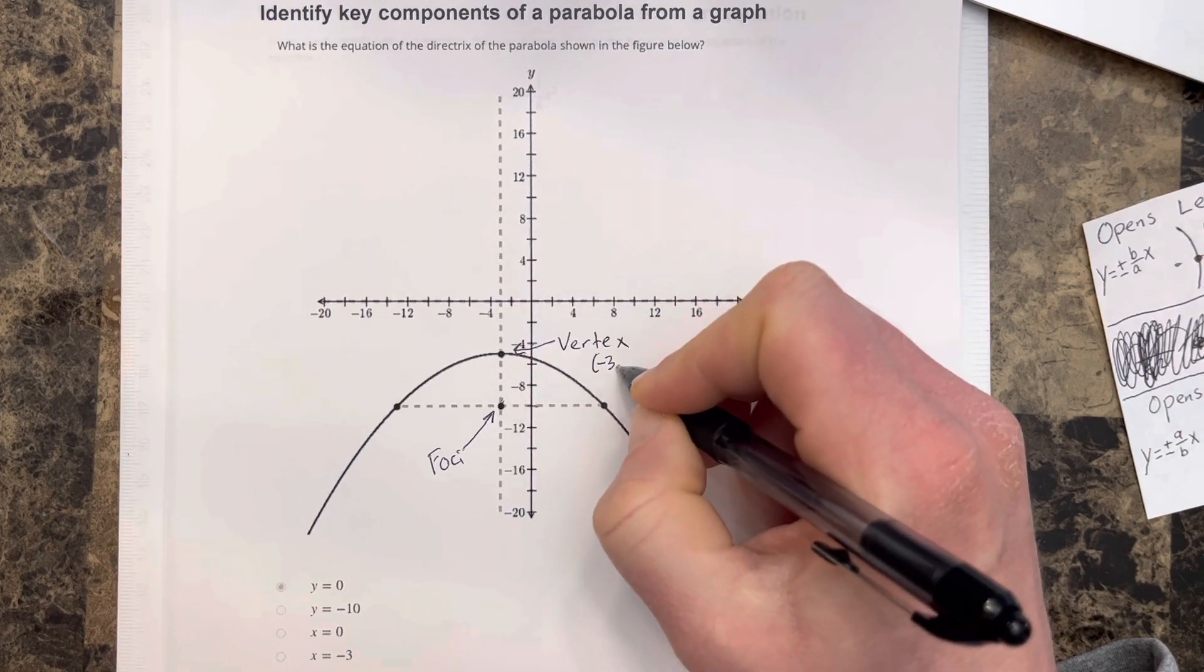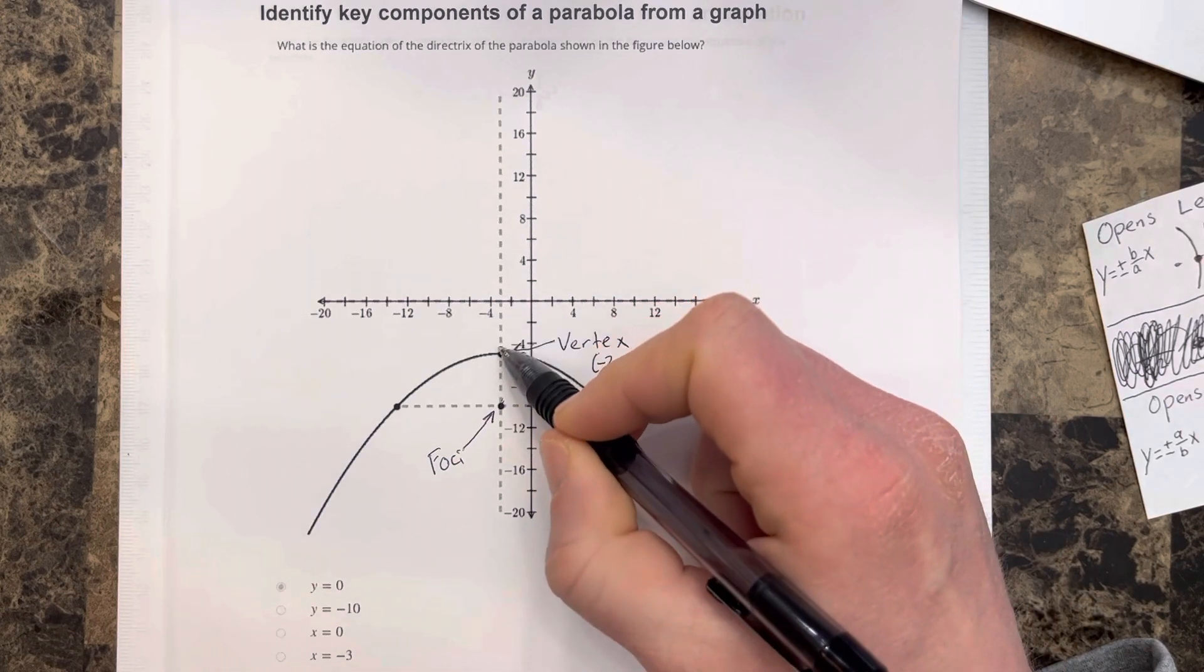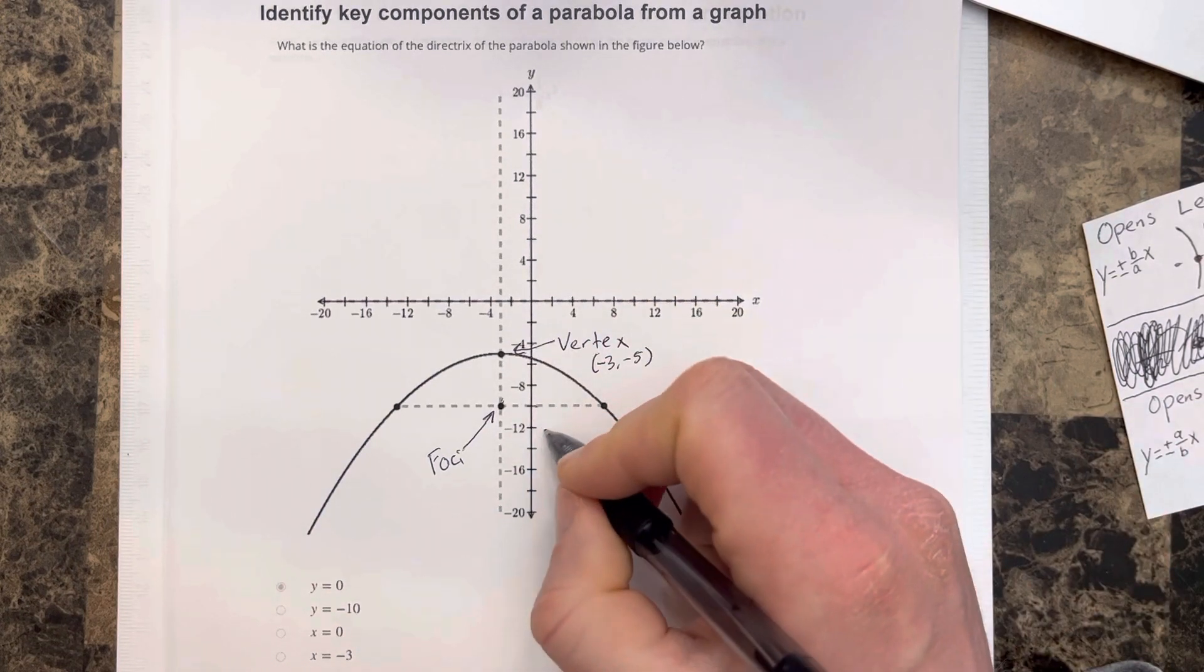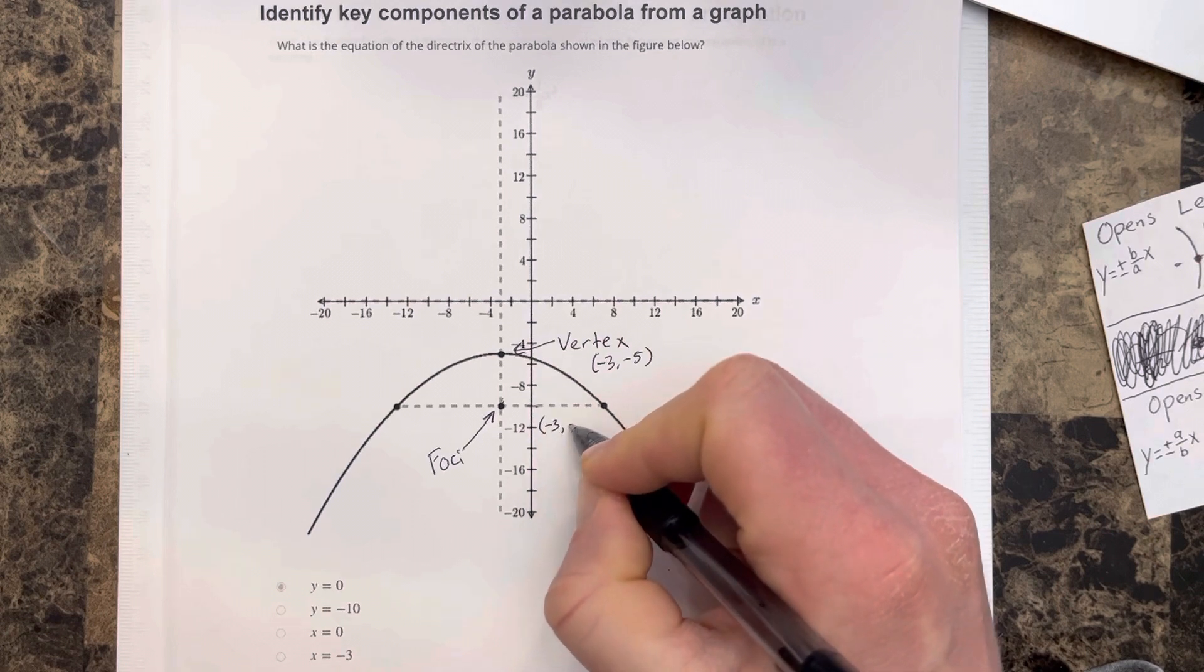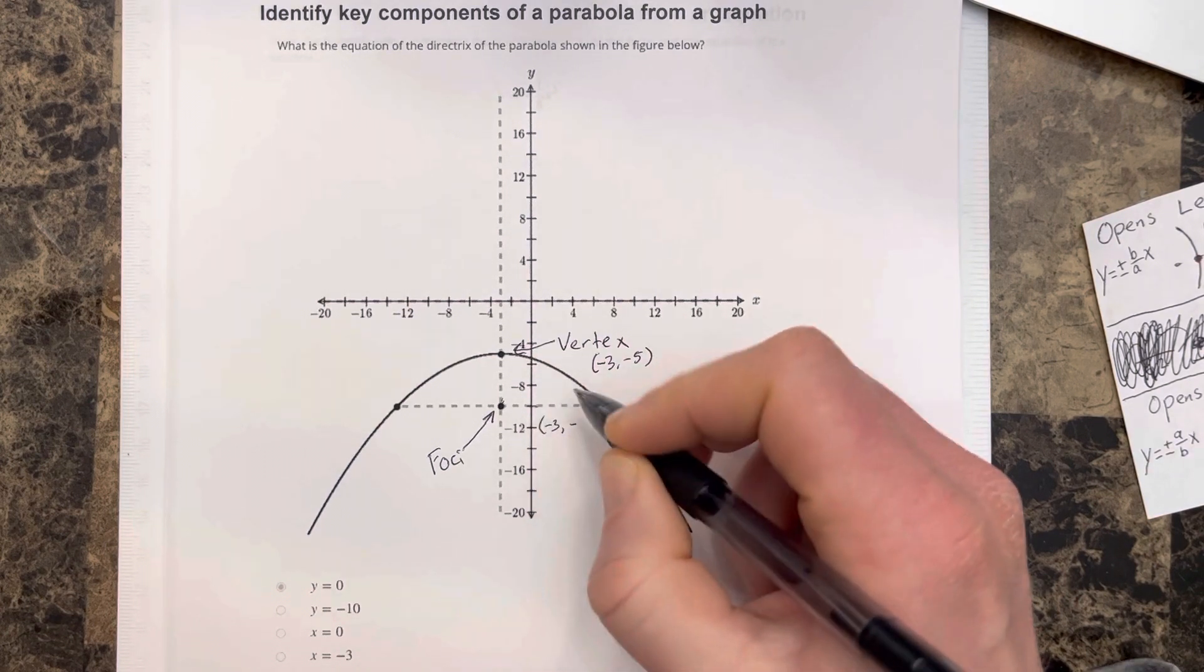The vertex is at negative 3, negative 5. If we look here, negative 3 for the x, negative 5 for the y. And the foci is at negative 3, negative 11. Actually, that's negative 10. Negative 3, negative 10.